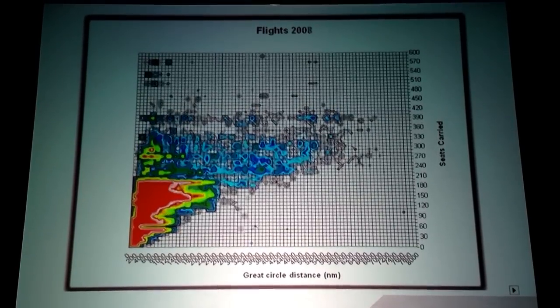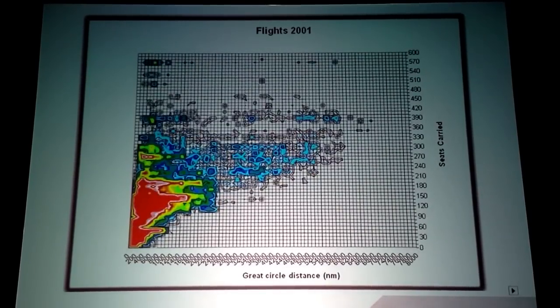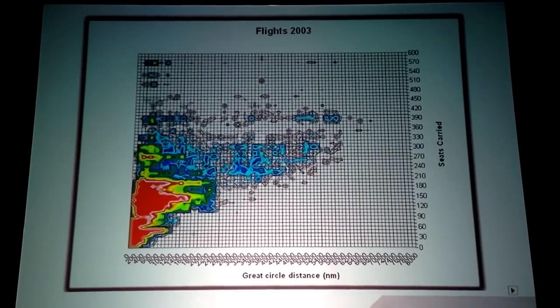Narrow body, about 550. Regional, 350. Turbo props, about 160.